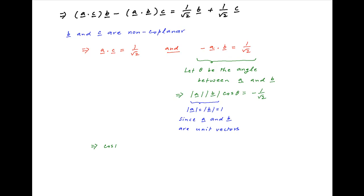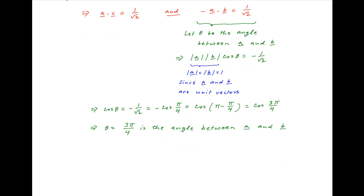This implies that cos theta is equal to minus 1 upon root 2 which is equal to minus cos of pi upon 4, which is equal to cos of pi minus pi upon 4 that is equal to cos of 3 pi upon 4. Therefore angle theta between vectors a and b is equal to 3 pi upon 4 which is the required answer.